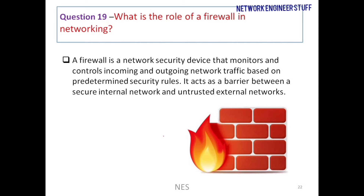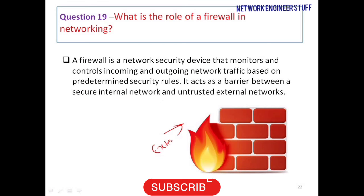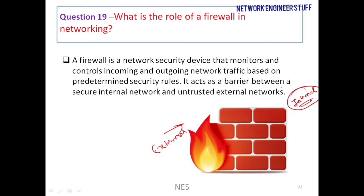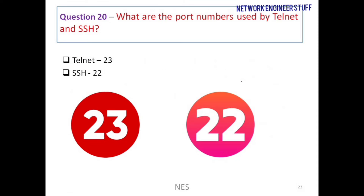Question number 19: what is the role of a firewall in networking? A firewall stands as a wall between your external network and your internal network, protecting your internal LAN or organization network from attacks originating from the public external network. It is a security device, and on the firewall we define rules — depending on those rules, the firewall will allow or restrict traffic.